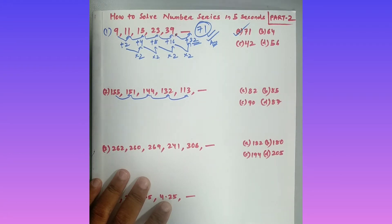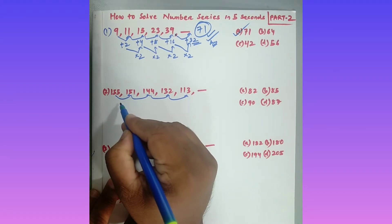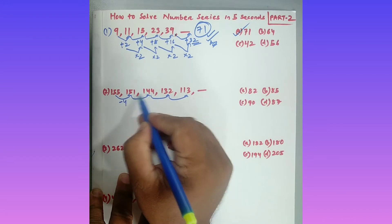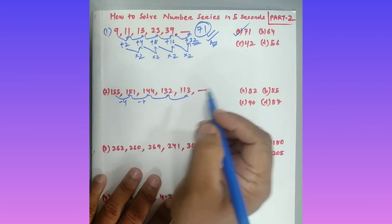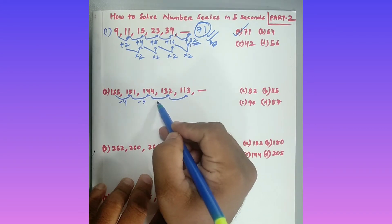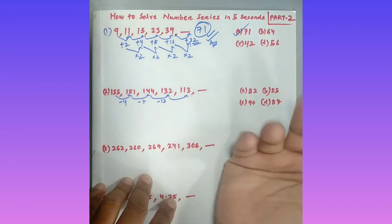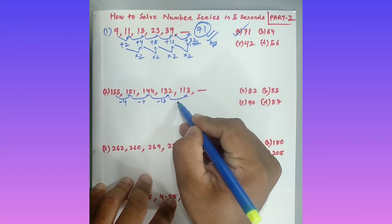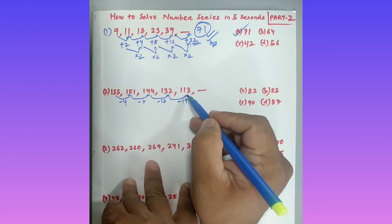Comparing 155 and 151: 155 minus 4 equals 151. Then 151 minus 7 equals 144. Then 144 minus 12 equals 132. Then 132 minus 19 equals 113. So the subtracted differences are 4, 7, 12, 19.